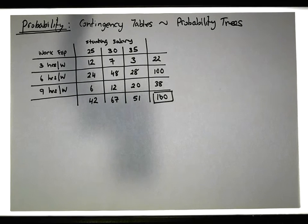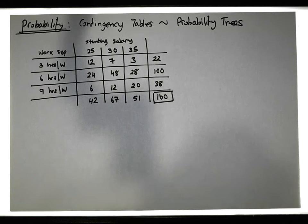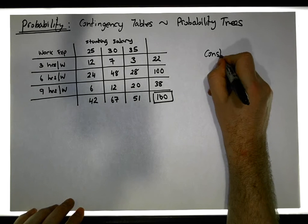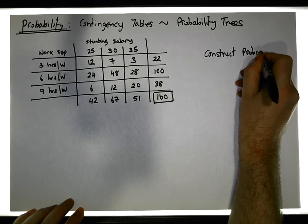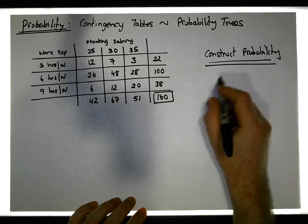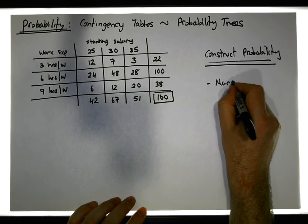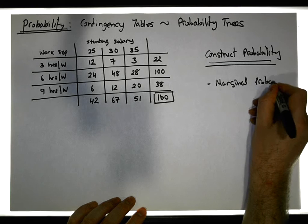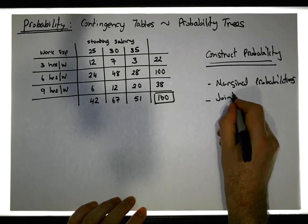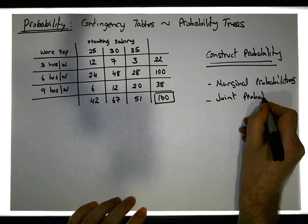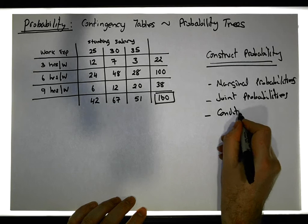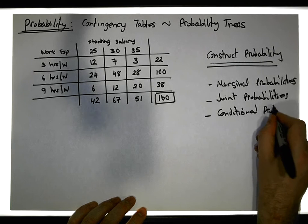What we'd like to do is construct a probability tree. There are two types of probability trees we can construct, and what we'd like to show on the probability tree includes the marginal probabilities, the joint probabilities, and also the conditional probabilities, which we can all derive from the probability tree.